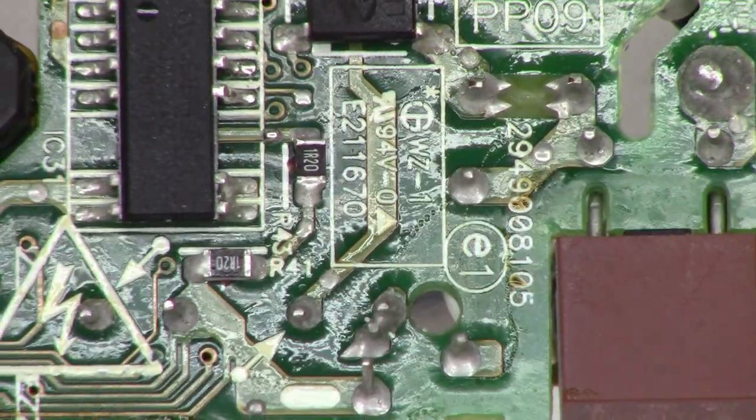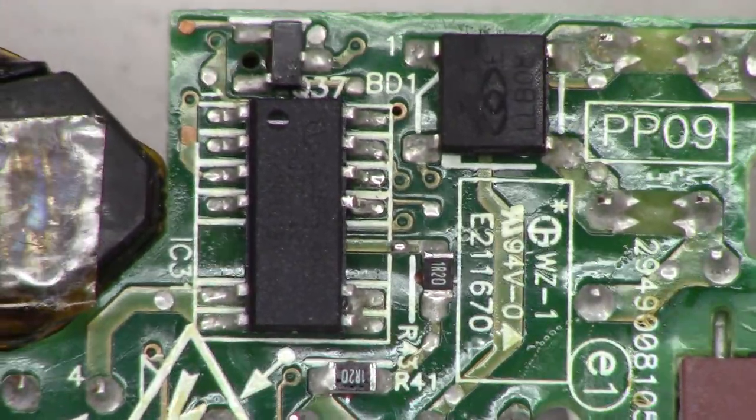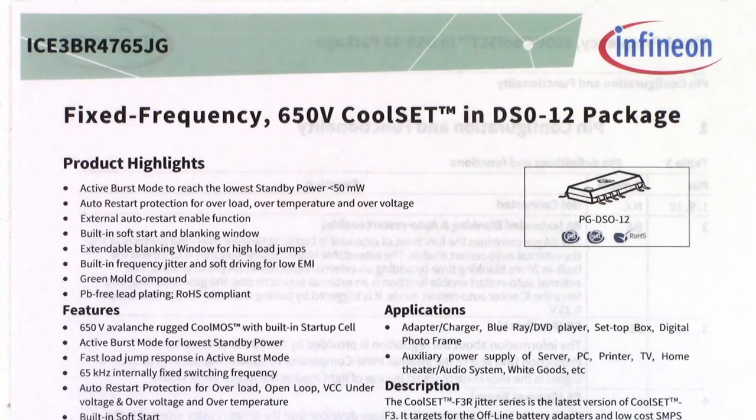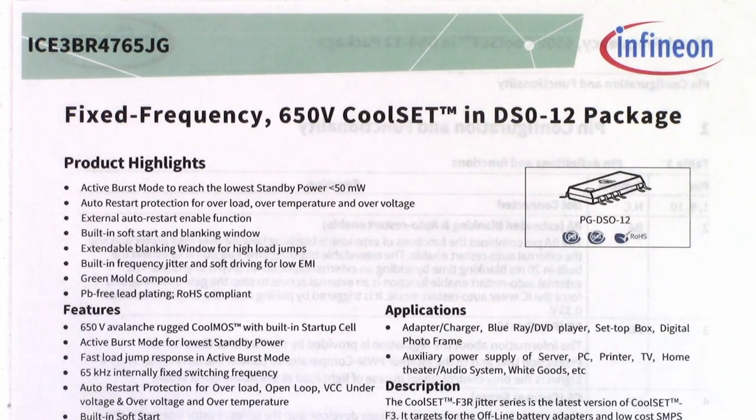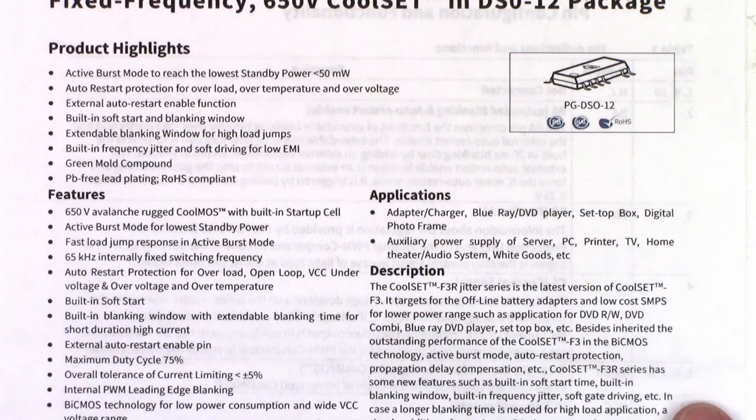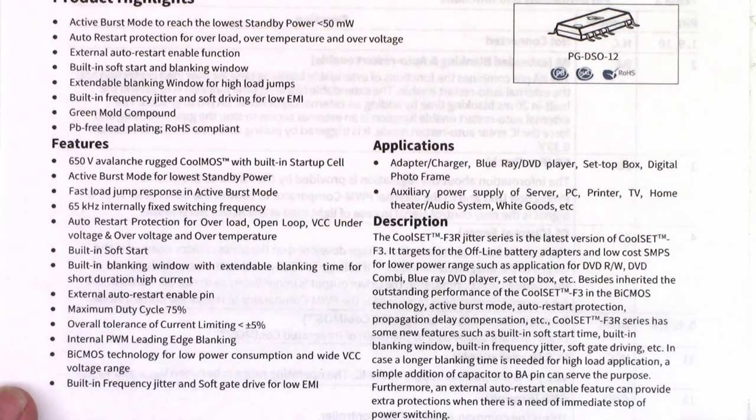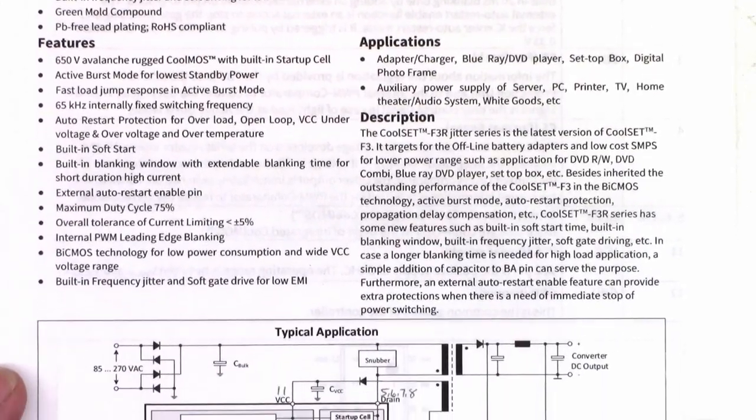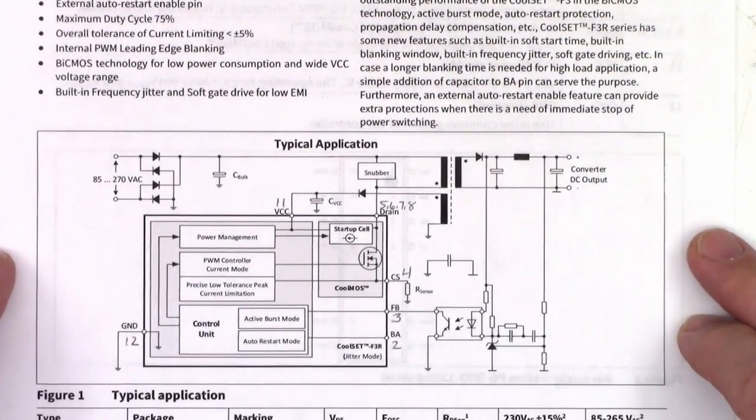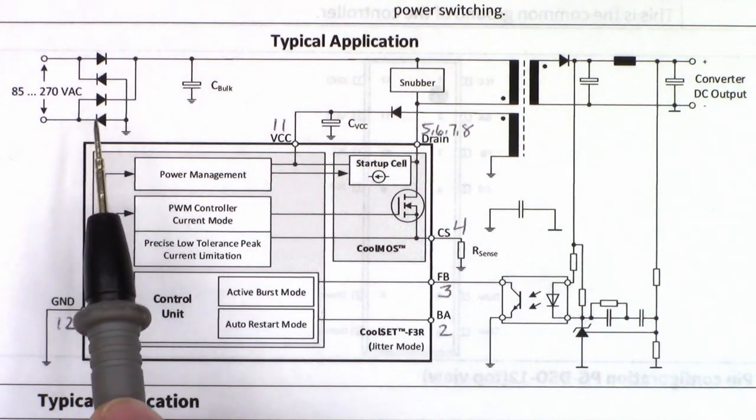For the main power supply switching controller, this uses an Infineon ICE3BR4765JG fixed frequency 650 volt cool set in DSO12 package. If you want to take a look at some of the specs on it, here they are. And then down here is a typical application. Pretty basic power supply here.